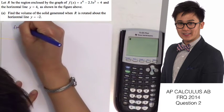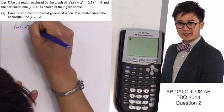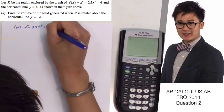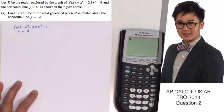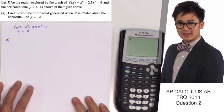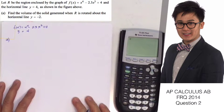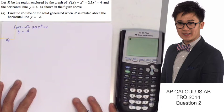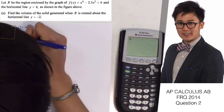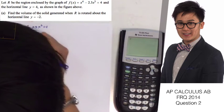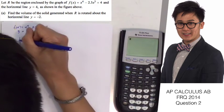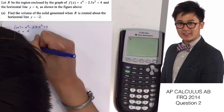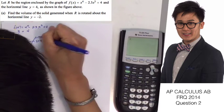So f(x) is x to the 4th, and the horizontal line y is equal to 4. Let's go ahead and draw the given function so we can easily visualize what we are working on. This is the horizontal line y = 4, and the function f(x) which is shown and given in the question — so this is our f(x).